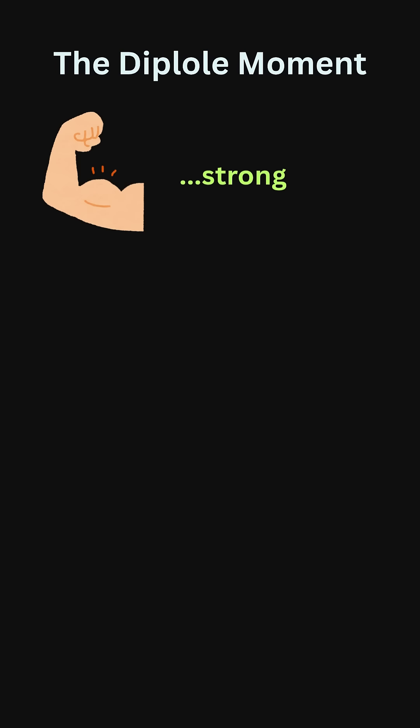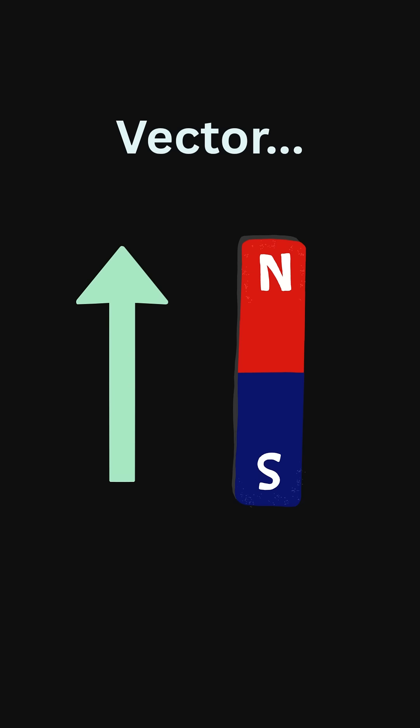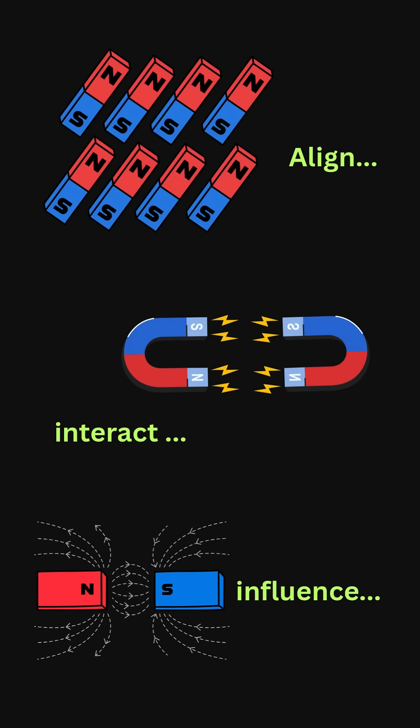The dipole moment tells us how strong and directional this tiny magnetic twin really is. It's a vector that points from south to north pole and drives how magnets align, interact, and influence fields.